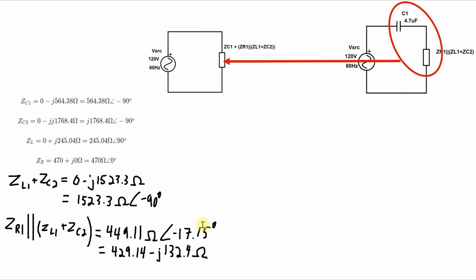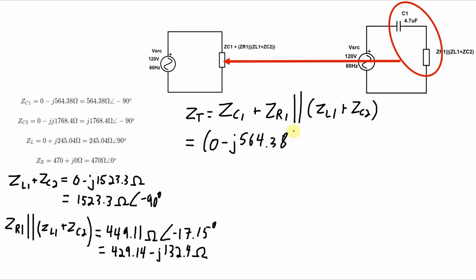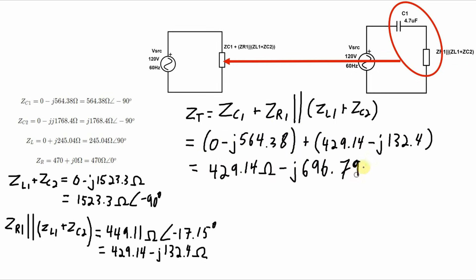Now finally, let's make this third equivalent circuit where we reduce the circuit down to one equivalent impedance by adding the impedance of capacitor 1 to this combined impedance we've just calculated. Now we've got that total impedance calculated, shown here in both rectangular and polar coordinates.